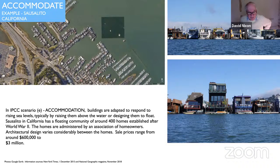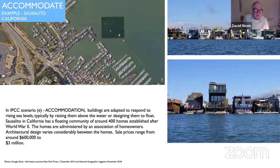This community was established after World War II and is an entirely independently governed community operated by an association of homeowners with an extraordinary range of architectural designs ranging from the traditional to the modern. Currently sale prices start at around $600,000 for a real floating shack and go up to $3 million. These are mostly supported on concrete foundations. The concrete flotation units are built in a boatyard quite close, very conventional construction. They're towed into place by motorboat, sunk in position, and the rest of the structure is built on top. From a technological point of view, nothing special at all.